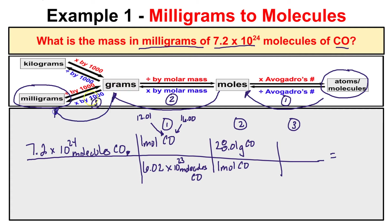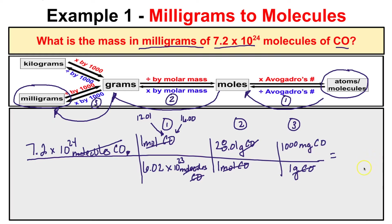The question is asking for the mass in milligrams, so we're at grams right now and we have to carry this one step further. We know that there are 1,000 milligrams in one gram. Now, molecules of CO on top cancel with molecules of CO on the bottom; moles of CO cancel; grams of CO on top and bottom cancel — leaving us with our answer in milligrams of carbon monoxide. We take 7.2 times 10 to the 24th divided by Avogadro's number, multiplied by 28.01, then multiplied by 1,000.